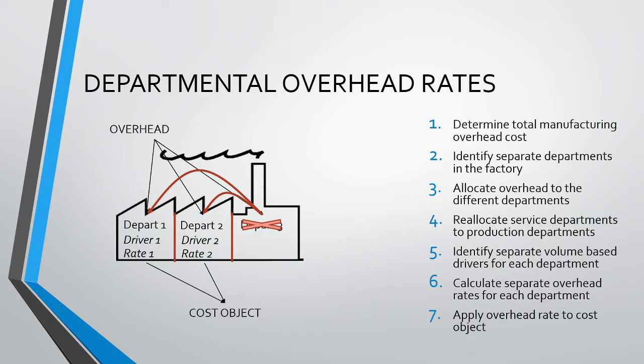Remember that this is our process of how we calculate departmental overhead rates. In our previous video, we focused on steps 1 to 3, with the end result of having allocated our various overheads to the different departments in the factory. In this video, we will be focusing on steps 4 to 7, which look at the reallocation of service departments, the calculation of the departmental overhead rates, and the allocation to the product.